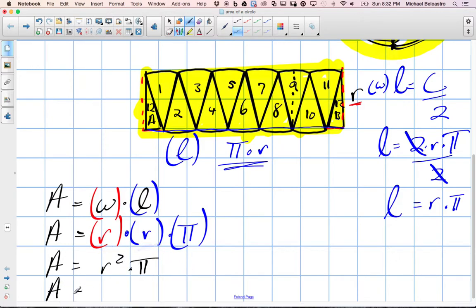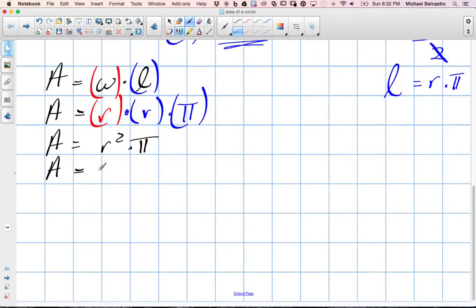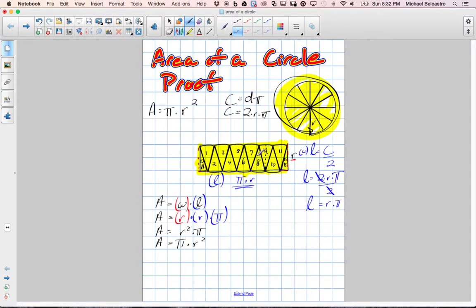And normally the formula is just written reverse of that. It doesn't matter what order we multiply it. So pi times R squared. And that essentially proves the area of a circle.